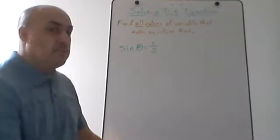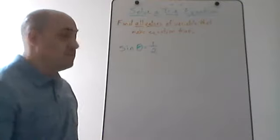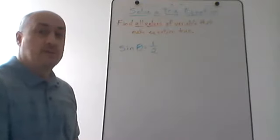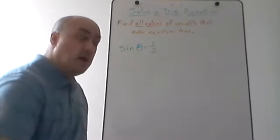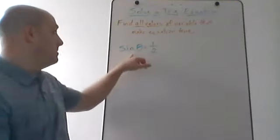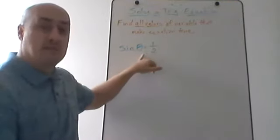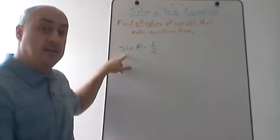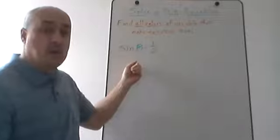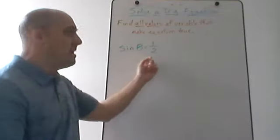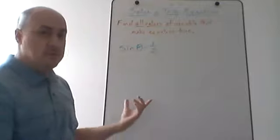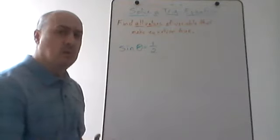In this video we're going to be talking about how to solve trigonometric equations. A trigonometric equation is an equation that involves a trigonometric function where the variable is inside the trig function. An example: sine of theta equals one half — my variable theta is inside the sine function. This is what we would call a trigonometric equation, and this is about as simple as a trigonometric equation could be.